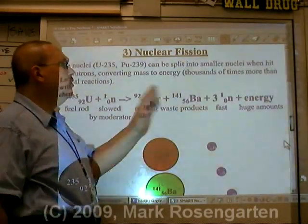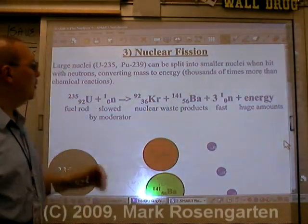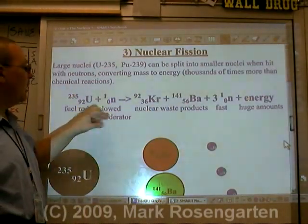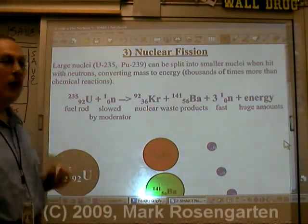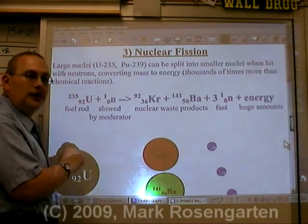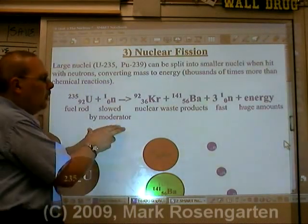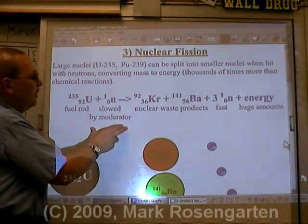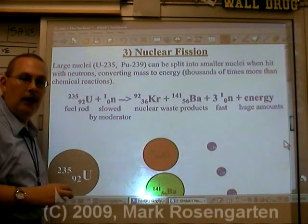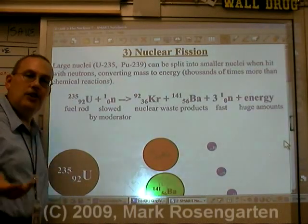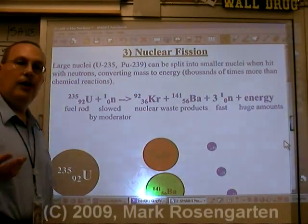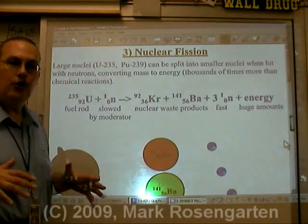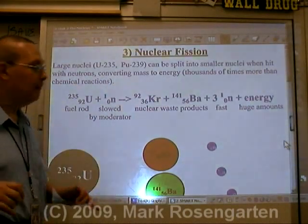The neutrons are coming out fast, but in order to split uranium, they've got to be slow. So in between the fuel rods, you have a material that can slow those neutrons down. This material is called the moderator. It's generally made of water. Water can actually slow down neutrons without stopping them.